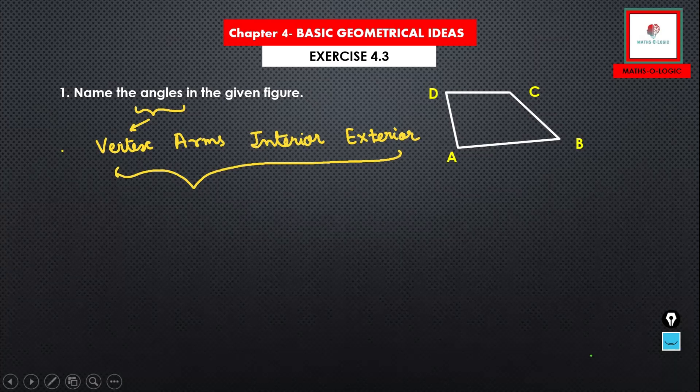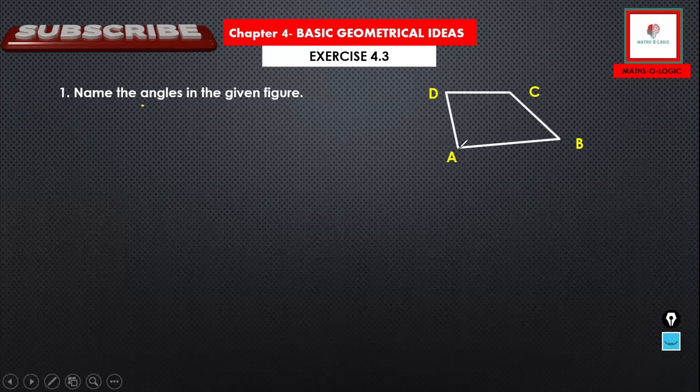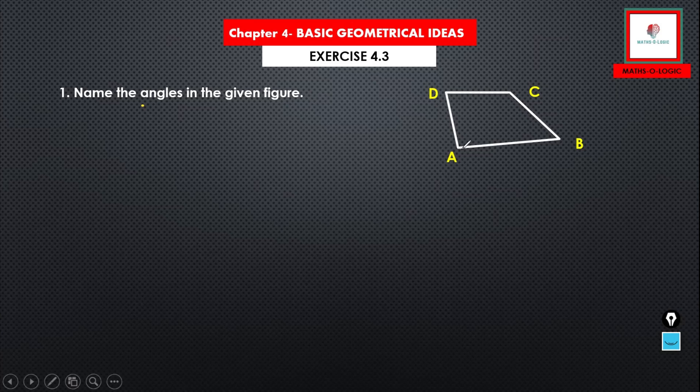Let's start with question number 1. It says, name the angles in the given figure. This is a figure which is a polygon which has 4 sides. It is called a quadrilateral. So, the quadrilateral is A, B, C, D. So, what are the angles?